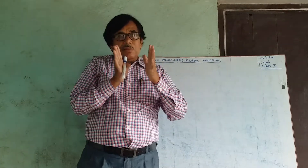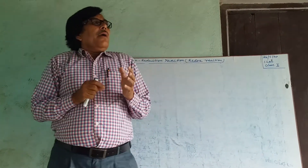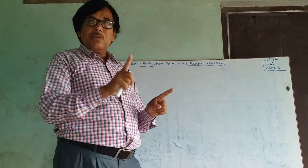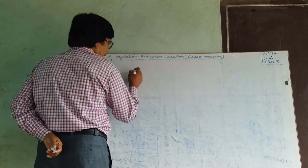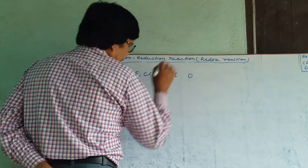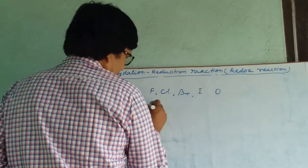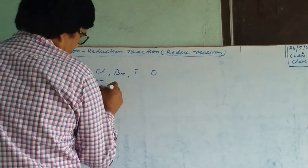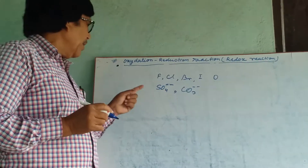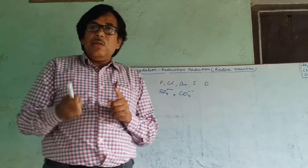We will define Oxidation as the addition or increment — not only addition but increment — of Oxygen or any other electronegative elements. Electronegative elements include Fluorine, Chlorine, Bromine, Iodine, Oxygen, etc. Electronegative radicals include Sulphate, Carbonate, etc. If any of these increases in a compound, it is said to be Oxidation.